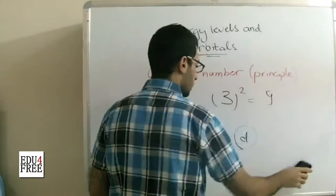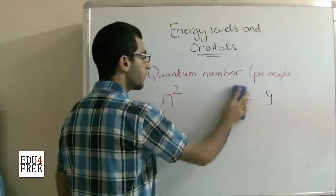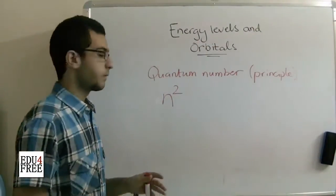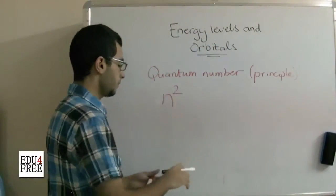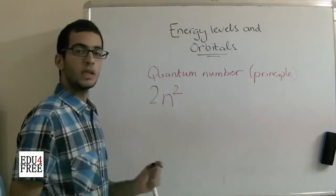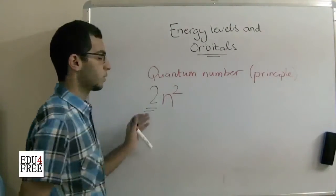And in order to know the number of electrons which are found in a certain energy level or which the energy level is capable to carry, we get it from the formula 2 n square. That's because each orbital has a limit of 2 electrons to carry.